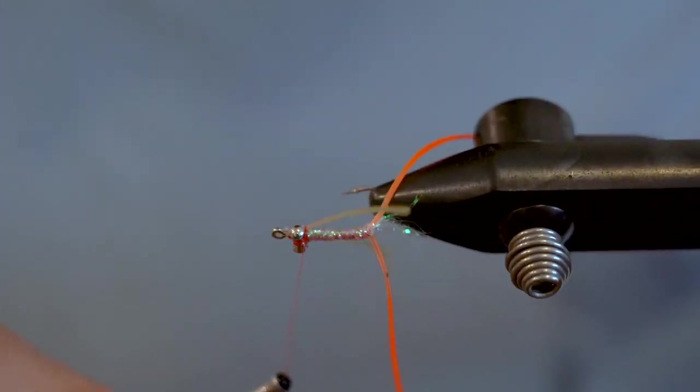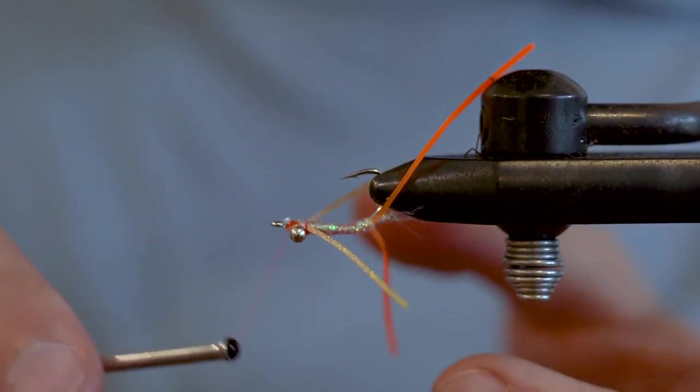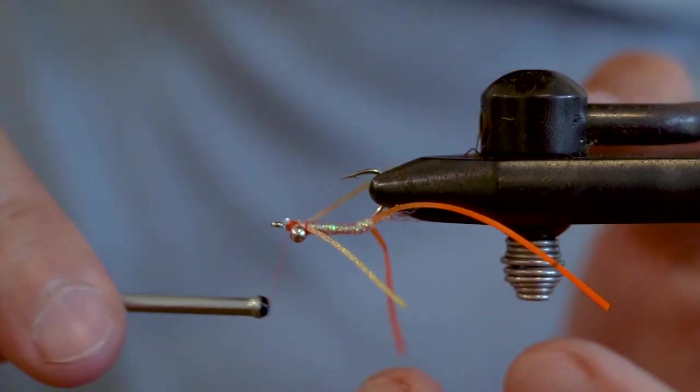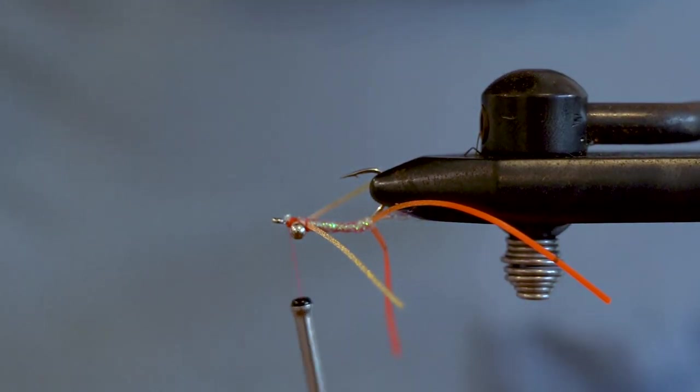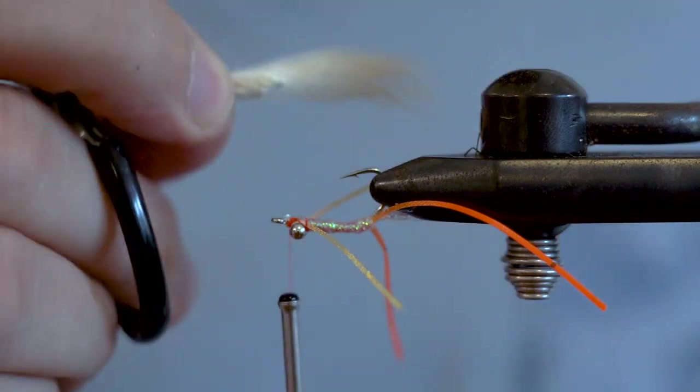Now roll the fly over, bring your thread back in front of the barbell, and then you're going to tie in a section of zonker strip. Trim a small taper into the tip of your zonker so that it doesn't interfere as much with the hook point.